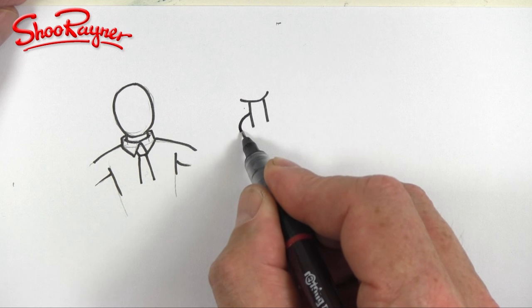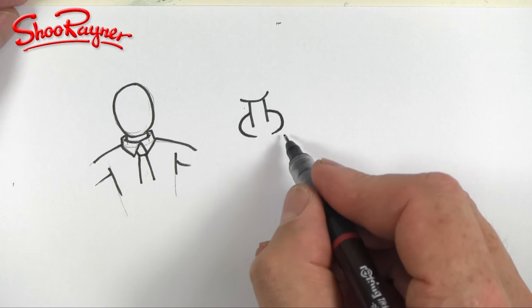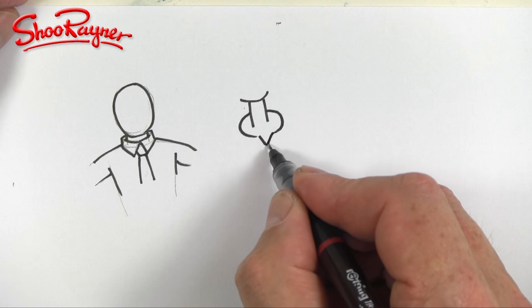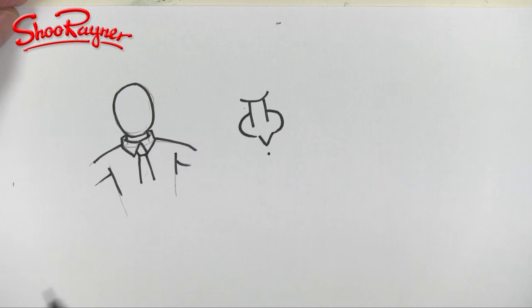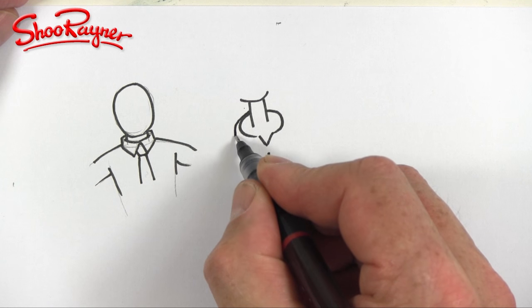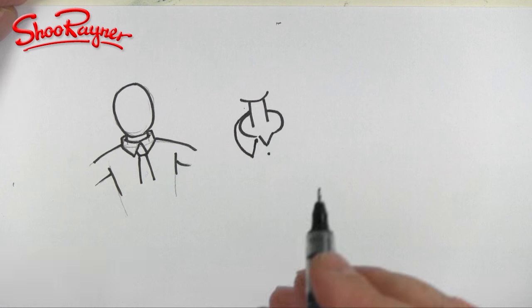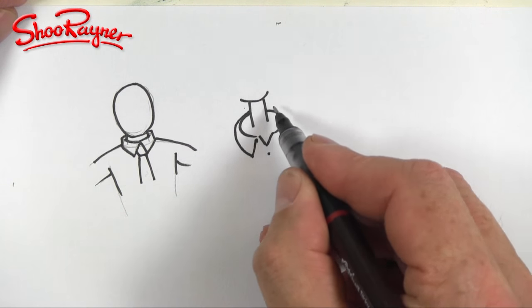So you want to have the collar coming around from the back like that and then that will kind of split down there to where the button is. Then you've got a very thin bit coming around and then it's going to go up and just fold around because this is folding down.